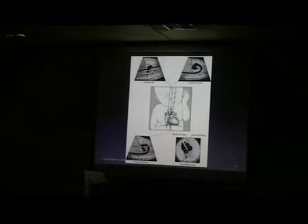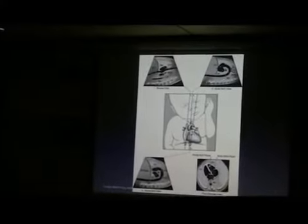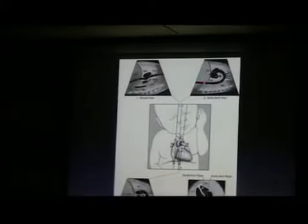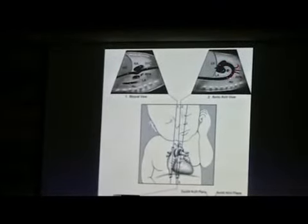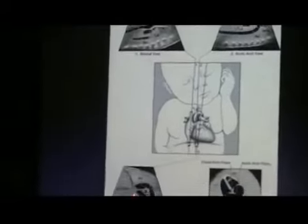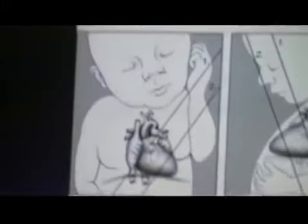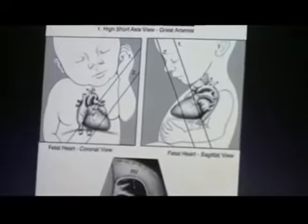These are the longitudinal sections. This is the bicaval view, and this is the section. This is the aortic arch view, and in the aortic arch view you will get the head and neck vessels. This is the ductal arch view, and the difference is that here there is no branching. And this is the four-chamber view. This is the short-axis view of great arteries, and this is the short-axis view of ventricles.